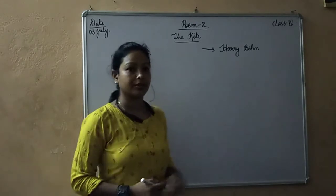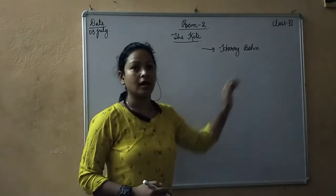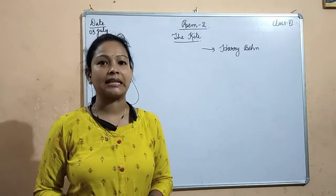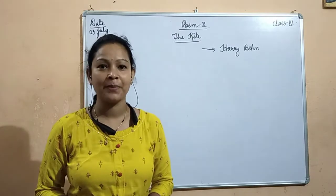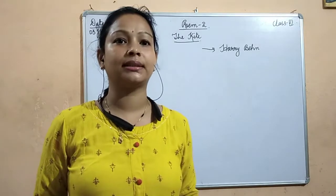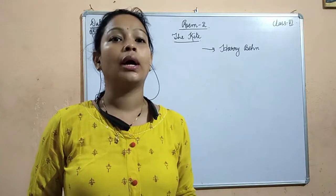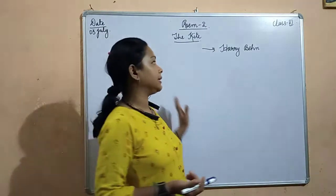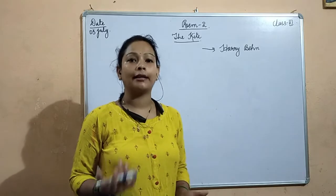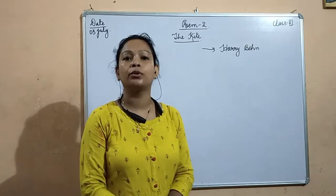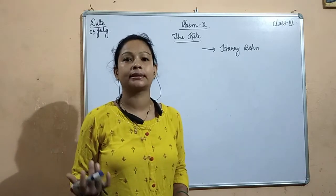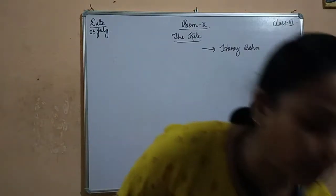It is a very beautiful poem written by Harry Behn. This poem is about the kite. We must have seen a kite flying high in the sky and observed how swiftly and beautifully it swings up and down, dives low in the air when the sky is clear. This poem beautifully describes how a kite flies high in the sky, what its movements are, and what happens when it gets stuck somewhere. Let's read out the poem loudly.